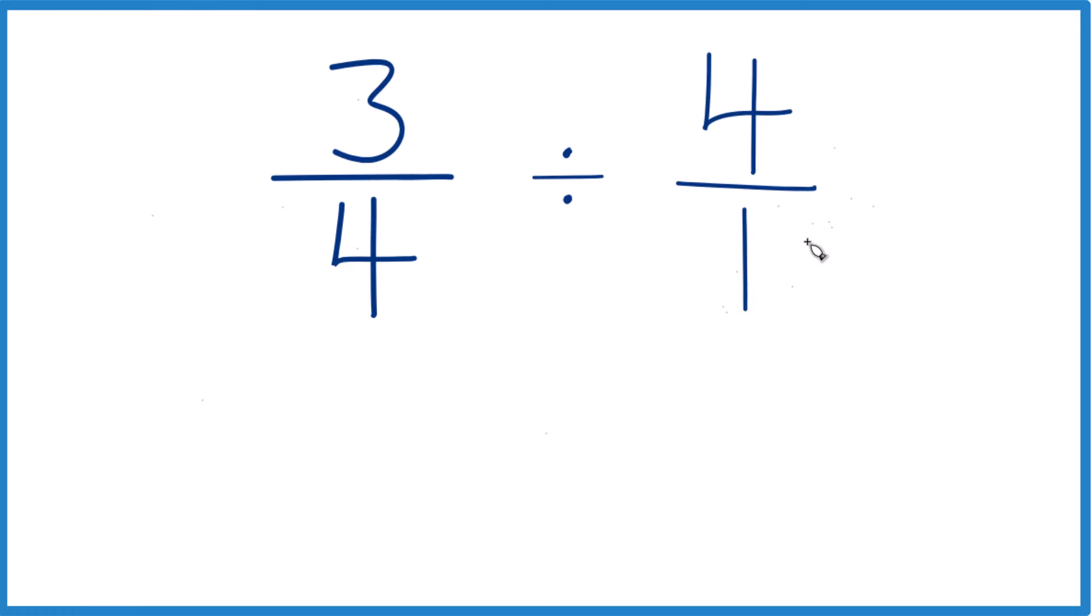Now everything lines up nice though. Then we take our 3 fourths here, and instead of division, we're going to multiply by the reciprocal of 4 over 1. Numerator goes down here, we move the denominator up, and we get 1 over 4, just 1 fourth.